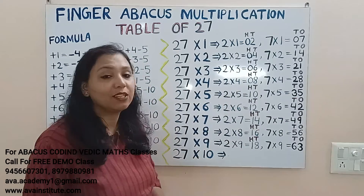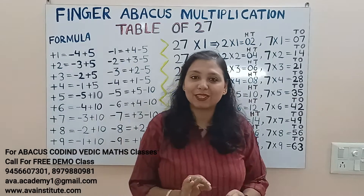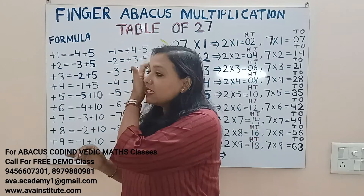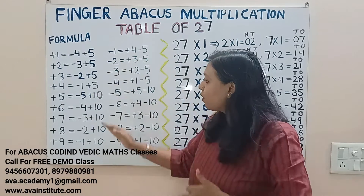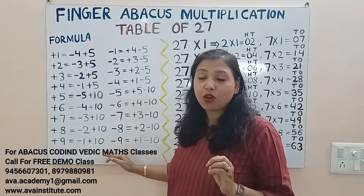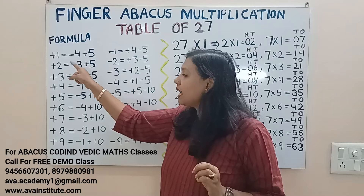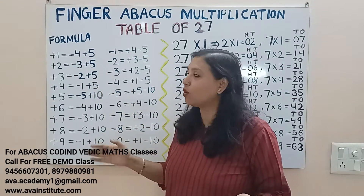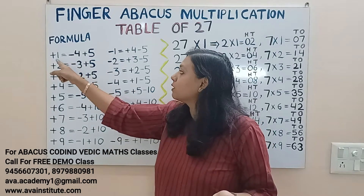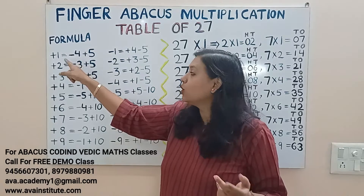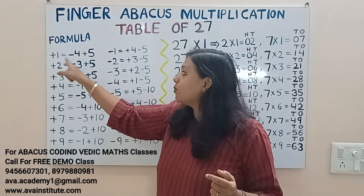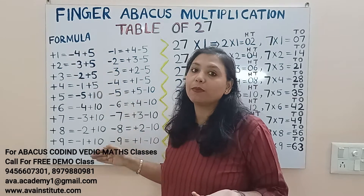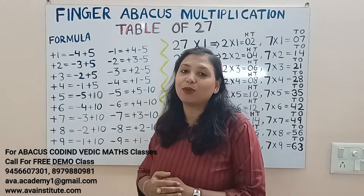27 tens: 27 times 10 is 270 — just put a zero. Friends, this is the one-space formula. If you need the ten-space formula, then just add an extra zero everywhere. For example, plus 1 formula is minus 4 plus 5, so plus 10 formula will be minus 40 plus 50. That's how you make the ten-space formula.